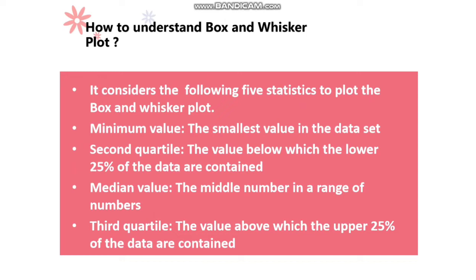The first quartile is the 25% value contained in the data set. The median value represents 50% of the data set. The third quartile is the upper 75% — the value returned at the 75th percentile of the data. Let me now show you how to create a box and whisker plot and explain it clearly.